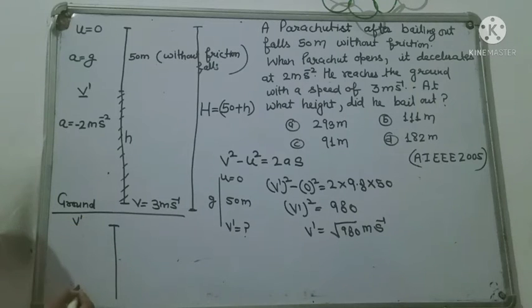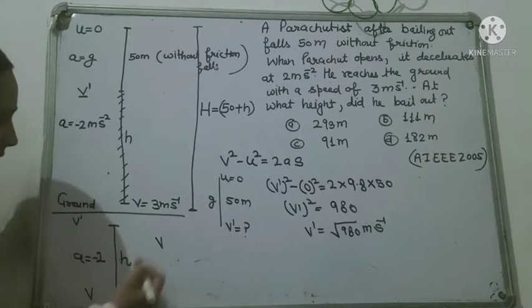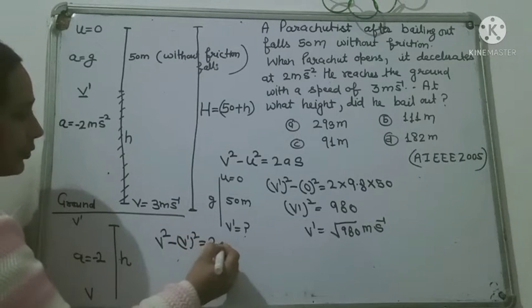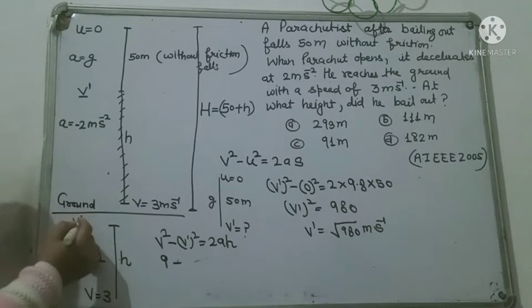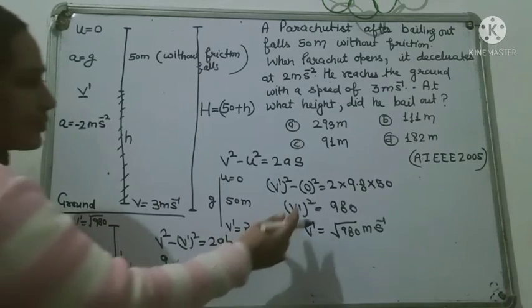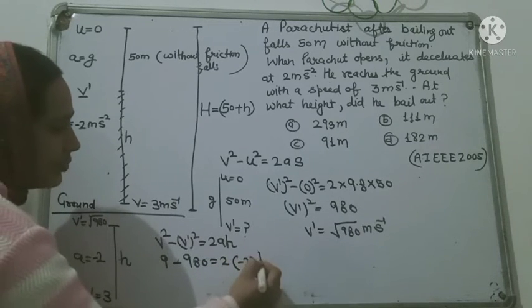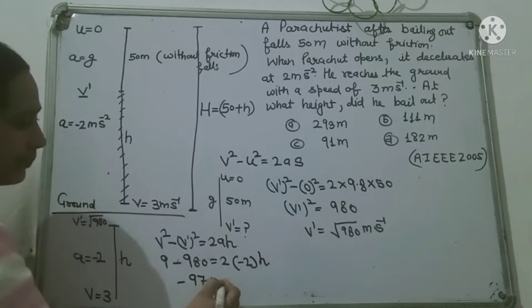अब दूसरी situation के लिए: हमारे पास V-dash आ गया = √980, final V = 3 m/s, height = H, और A = minus 2 m/s². दुबारा formula लगाएं: V² - V-dash² = 2 × A × H. तो 3² - (√980)² = 2 × (−2) × H. यानि 9 − 980 = −4H. इसलिए −971 = −4H.